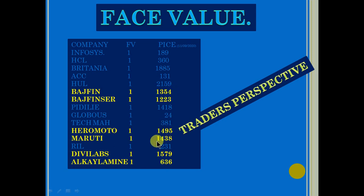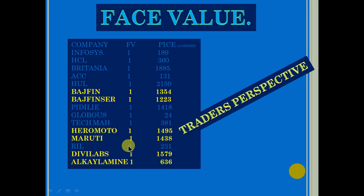Hero MotorCorp and Maruti — when you convert their prices to face value of 1, Maruti comes to approximately 1495 and Hero MotorCorp to 1438. If 1495 is Maruti's FV-1 price and 1438 is Hero MotorCorp's, then who will buy Hero MotorCorp? Maruti is 1000 times more promising than Hero MotorCorp. Similarly, RIL becomes 231 rupees on a face value of 1 basis.